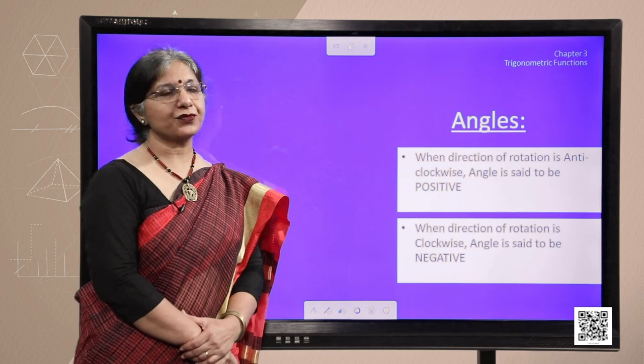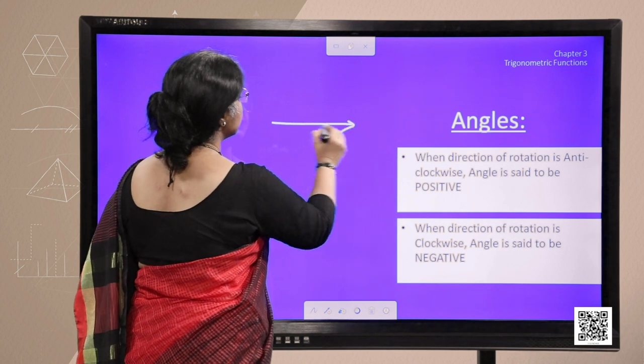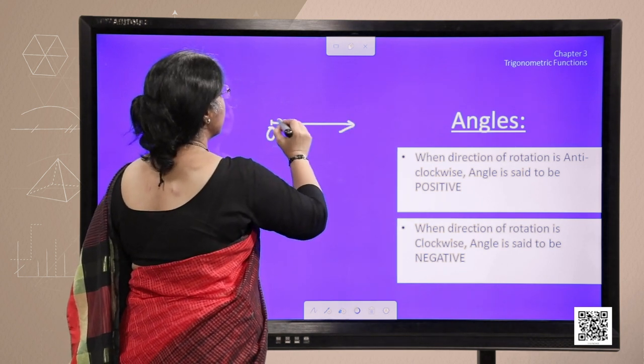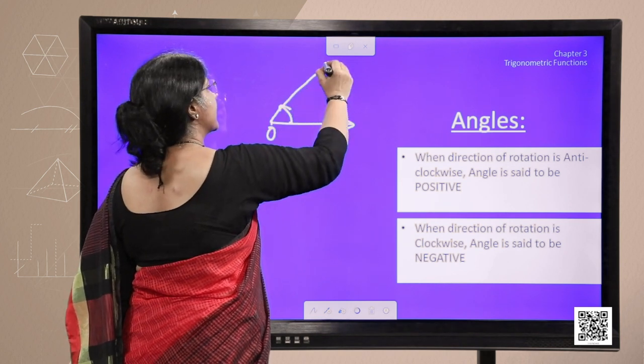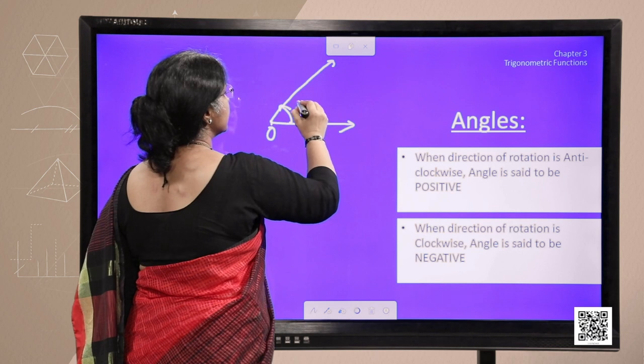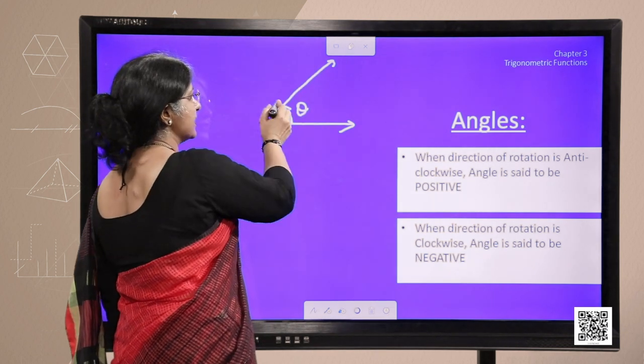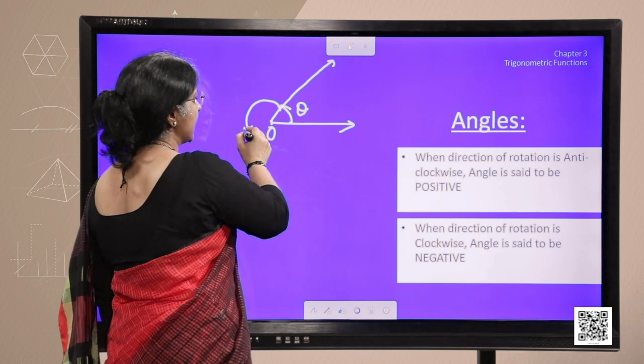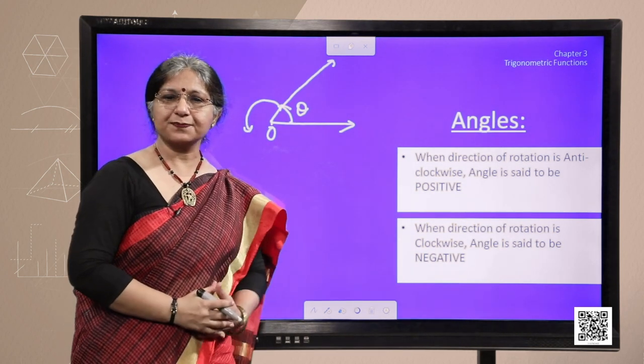Now angles are of two types. When a direction of rotation is anticlockwise, this is the initial ray, this is vertex and if we move anticlockwise, angle traced is called positive angle. Now terminal ray is moving anticlockwise. This angle is being traced in a positive direction. Therefore, this angle is positive.